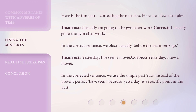Here is the fun part: correcting the mistakes. Here are a few examples. Incorrect: 'I usually am going to the gym after work.' Correct: 'I usually go to the gym after work.' In the correct sentence, we place 'usually' before the main verb 'go.' In the correct sentence, we use the simple past 'saw' instead of the present perfect 'have seen,' because 'yesterday' is a specific point in the past.